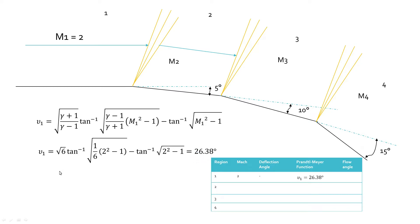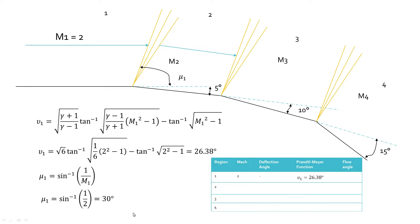To find the flow angle, use the flow angle formula. The flow angle mu1 is the angle between the horizontal flow direction and the first expansion fan. Substitute the Mach number to find mu1 for region 1. As an alternative method, refer to the gas table for isentropic flow of a perfect gas where gamma equals 1.4.